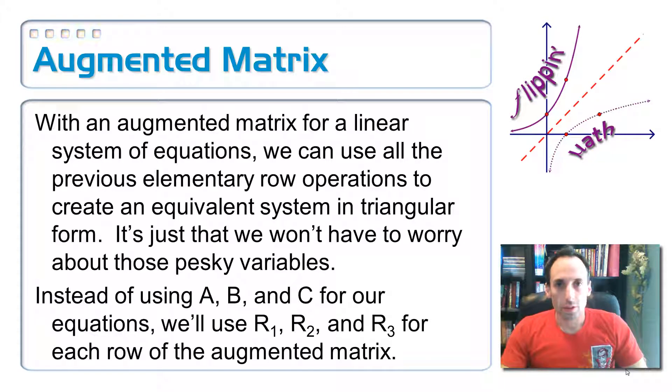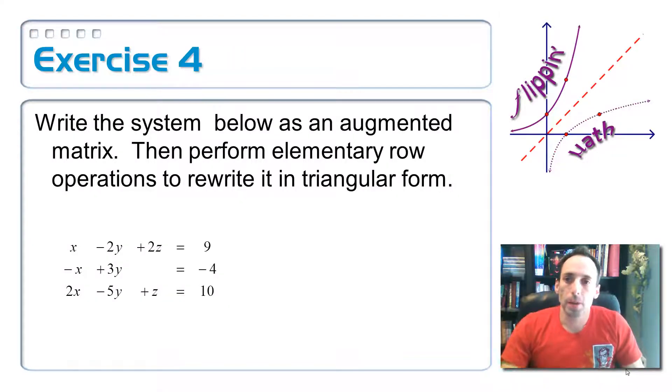So, I think that you might like this a little bit better, because it's going to be a little bit less to write down. Okay, so on exercise 4, we're going to rewrite this in an augmented matrix, and then perform those elementary row operations to turn it into an equivalent form in triangular form.